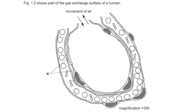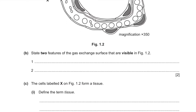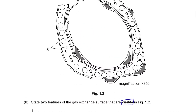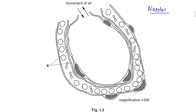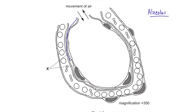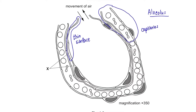Figure 1.2 shows part of the gas exchange surface of a human — this is the magnified version of an alveolus. Part B: State two features of the gas exchange surface visible in figure 1.2. Another easy question. The surface is thin for diffusion, and it is surrounded by capillaries so that it is well supplied by blood.